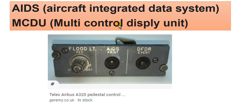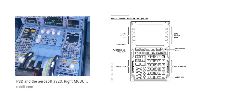MCDU stands for Multi-purpose Control Display Unit. There is a switch for the DFDR if you want to manually operate it, but the FDR is normally operated automatically. Here we can see the location of the MCDU — here, here, and here on the control stand pedestal.